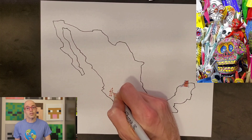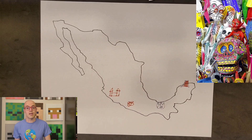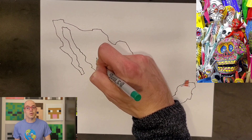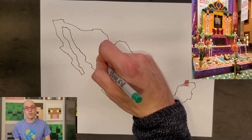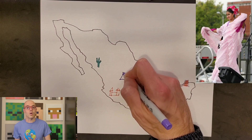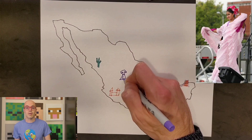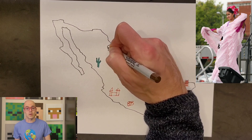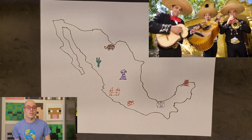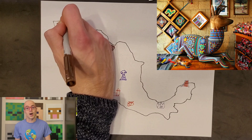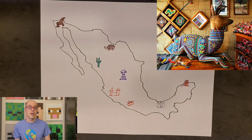Mexican festivals and celebrations such as Dia de los Muertos, or Day of the Dead, and Cinco de Mayo are celebrated with enthusiasm nationwide, showcasing the country's colorful traditions and community spirit. Additionally, the concept of fiesta, or party, permeates Mexican culture, emphasizing the importance of celebration, family, and community. Overall, Mexico's culture is a dynamic tapestry of old and new, blending ancient traditions with modern influences in a uniquely Mexican way.